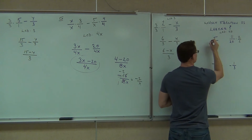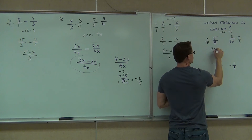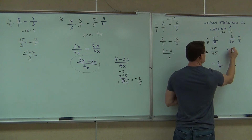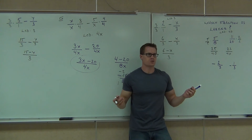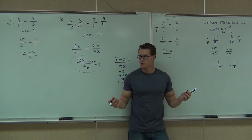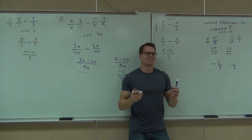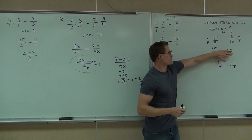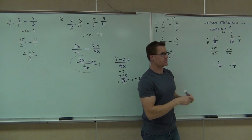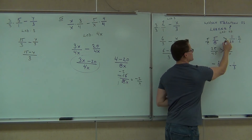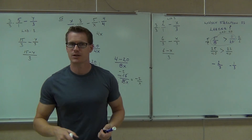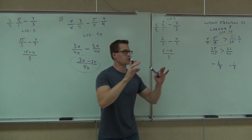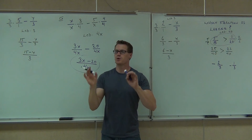Multiply 5/8 by 5 over 5, and 11/12 by 2 over 2. You get 25 over 40 and 22 over 40. So 5/8 is bigger. If you have the same denominator, what number is bigger — 25 or 22? Definitely 25. That means this one is bigger: 5/8 is bigger than 11/12. That's how you tell — you find a common denominator and then just look at the numerators. Whichever numerator is bigger tells you which original fraction is bigger.